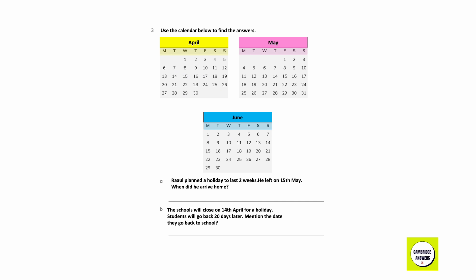Raul planned a holiday to last two weeks. He left on 15th May. When did he arrive home? One week equals seven days, and two weeks equals 14 days. Counting 14 days after 15th May brings us to 29th May.